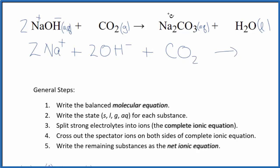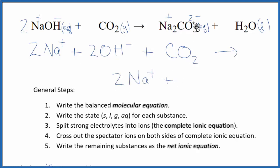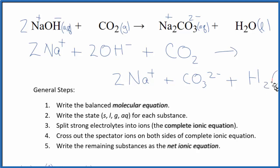For the products, sodium has a one plus charge and the whole carbonate is two minus — good one to remember. So we have two sodium ions plus the carbonate ion. With net ionic equations, we don't split liquids apart either, so we just have H2O. This is our complete ionic equation.